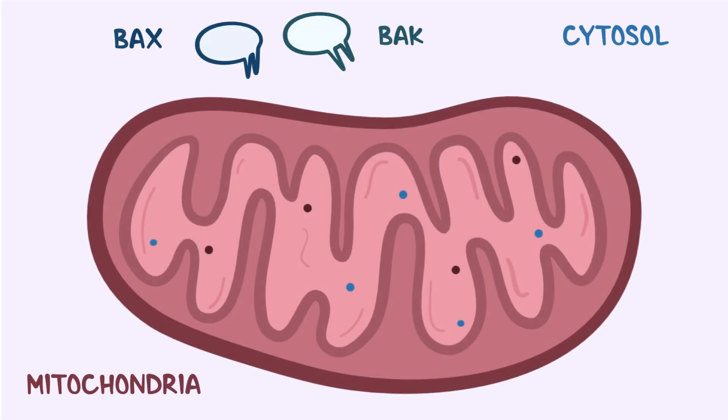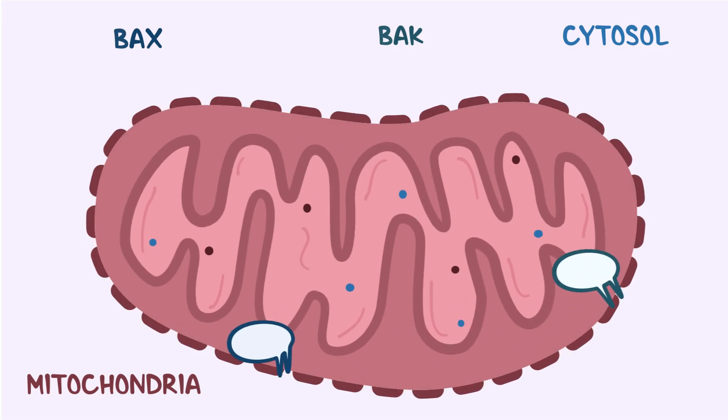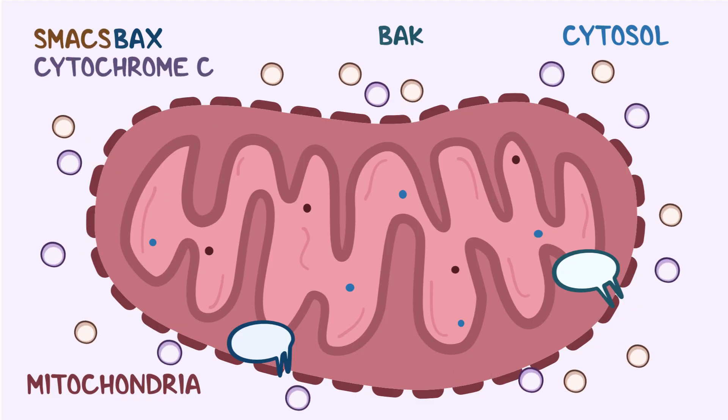Once in the mitochondria, BAX and BAK pierce the outer mitochondrial membrane, making it porous and leaky. This allows two additional proteins, called SMAC and cytochrome C, to spill into the cytosol.